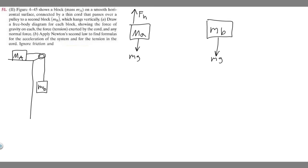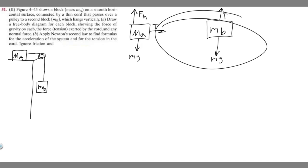We also have a tension force on each block. The tension force for M sub A is coming from the horizontal direction, so it goes in the opposite direction — we'll just call this T. For M sub B, the tension is from above, so it acts upward. The tension force just goes opposite to wherever the cord is. So these are our free body diagrams, which are our answers to part A.